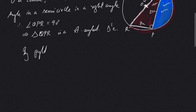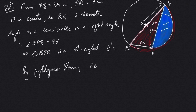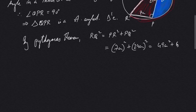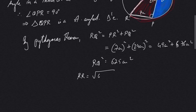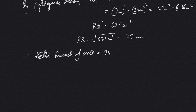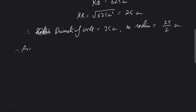By Pythagoras' theorem, RQ² = PR² + PQ². PR is 7 and PQ is 24, so RQ² = 49 + 576 = 625 centimeters squared. Therefore RQ = √625 = 25 centimeters. So the diameter of the circle is 25 centimeters, and the radius will be 25/2 centimeters.